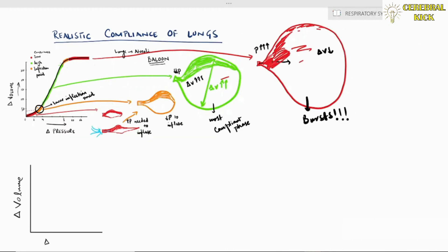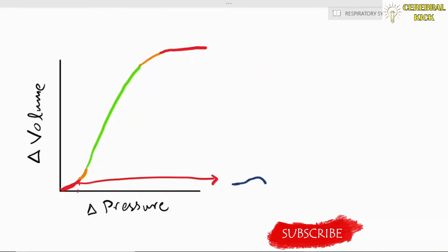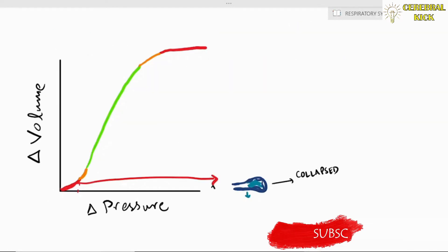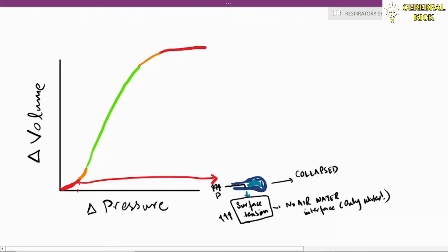Alveoli in the lungs behave in a similar way to balloons. Initially there is a red zone — a low compliant system where surface tension is very high, requiring very high pressures to generate a volume change in the alveolus.